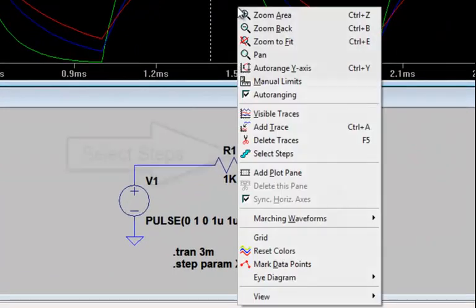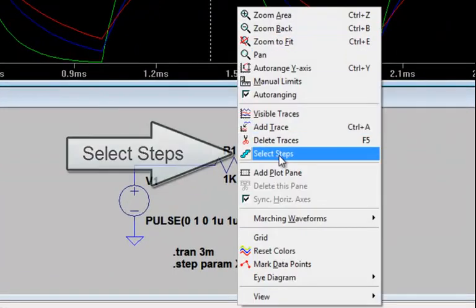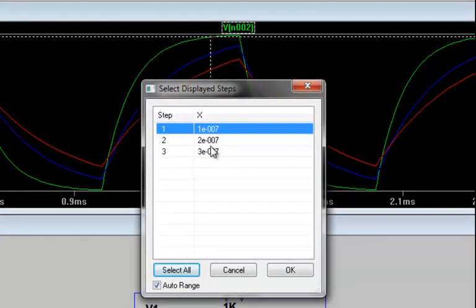Alternately, you can also right click on the waveform viewer and select the steps that you want to view in the waveform viewer, using either shift or control option as well.